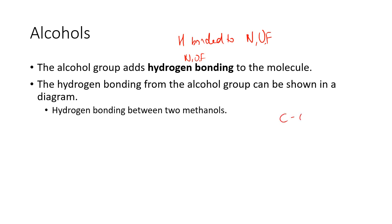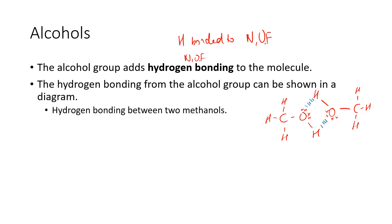Let's draw two methanol molecules. Here's one methanol — I've drawn it in that particular V-shape because remember this molecule is a V-shape around that central oxygen atom. Here's another methanol. Where will the hydrogen bonds be? Remember, these aren't hydrogen bonds — those are covalent bonds. The hydrogen bonds are the bonds between the hydrogen, which is bonded to a very electronegative element.